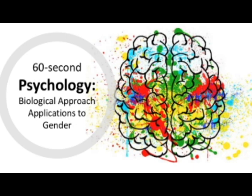The biological approach accounts for gender through sex hormones and evolutionary psychology. Testosterone is generally described as the male sex hormone and estrogen is the female sex hormone. However, high levels of testosterone have been linked to the development of masculine typical gender regardless of a person's biological sex. For example, aggression is considered a masculine behaviour and has been linked to high levels of testosterone in both males and females.